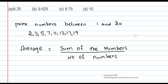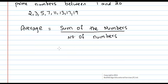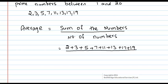Here the sum will be 2 plus 3 plus 5 plus 7 plus 11 plus 13 plus 17 plus 19, divided by number of numbers. How many? 8 numbers.